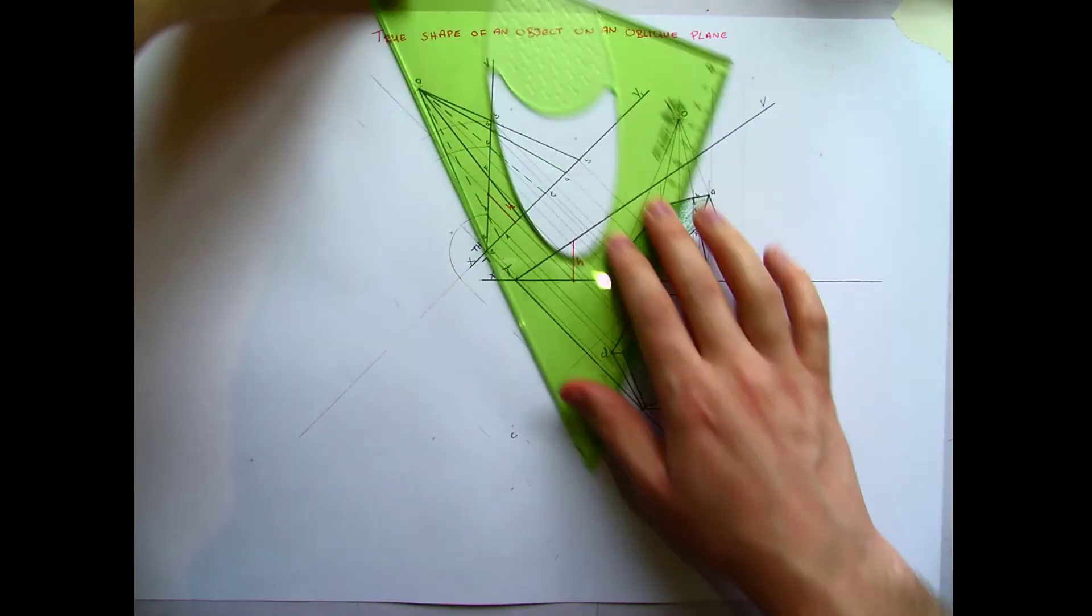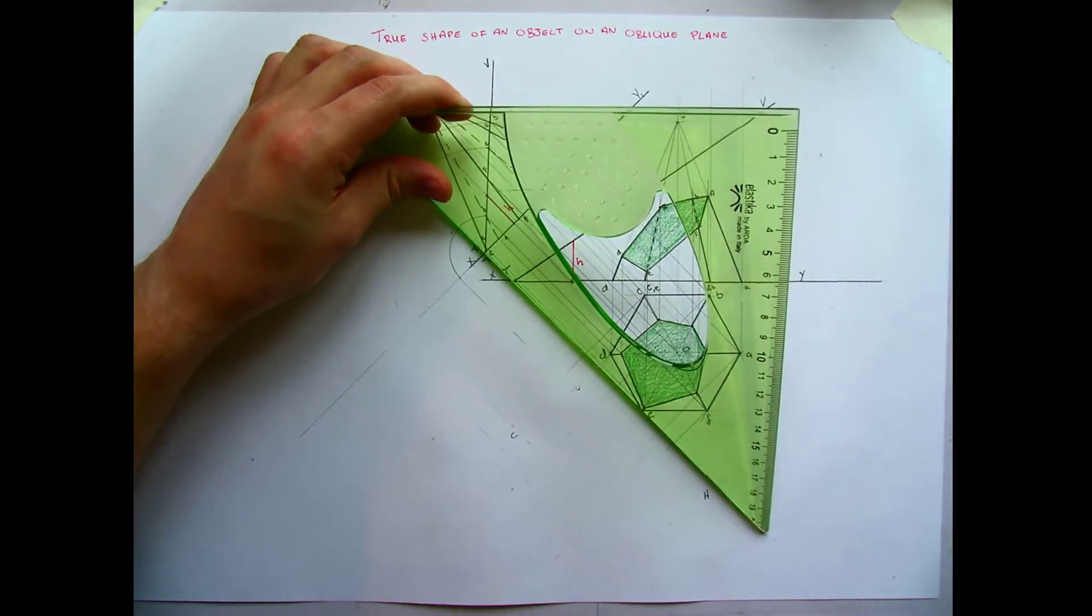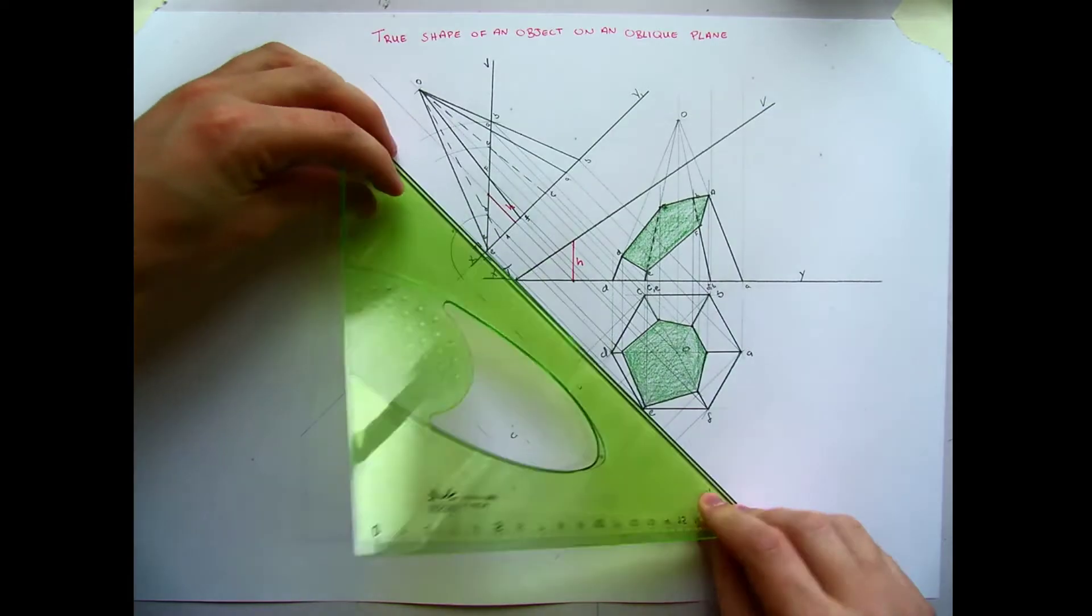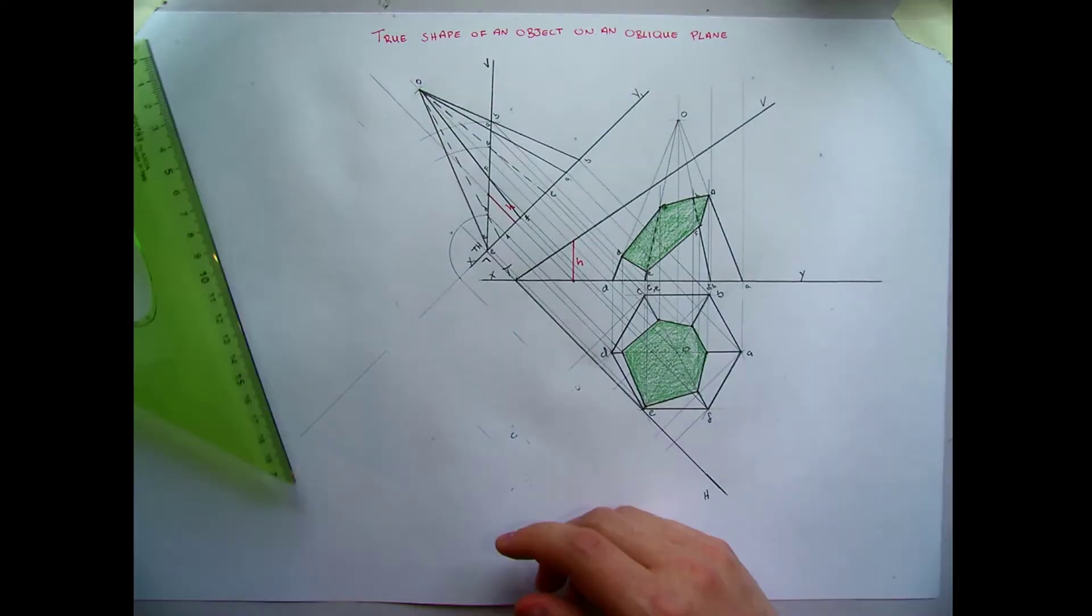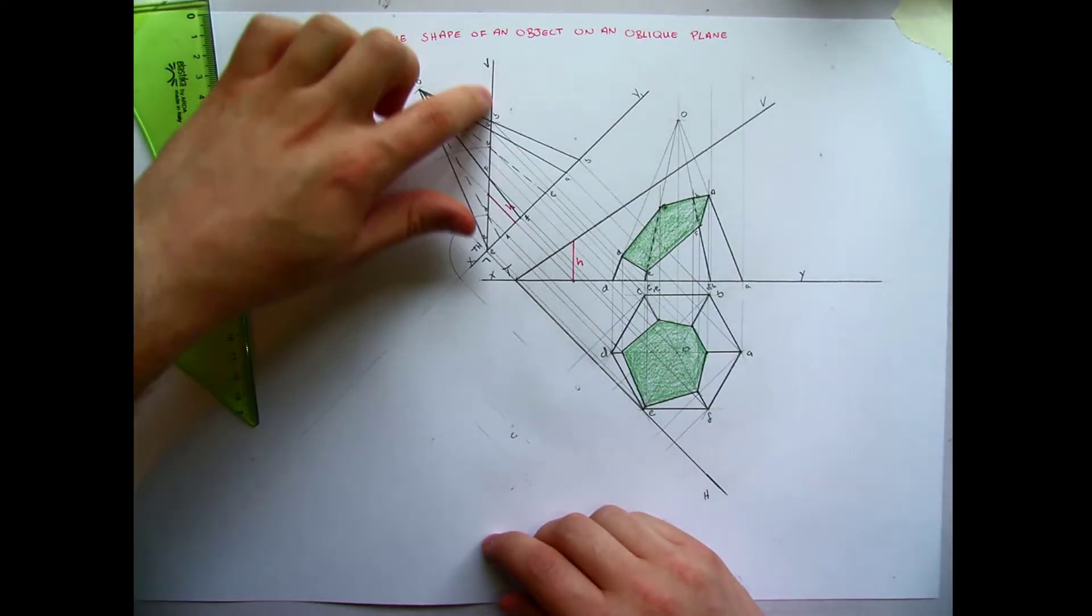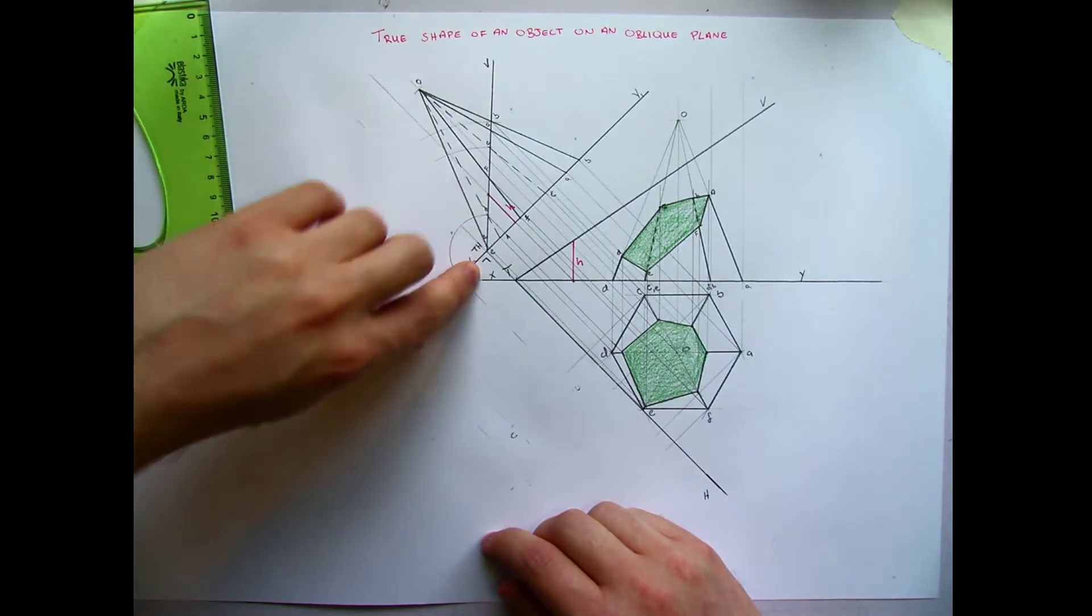Now to do this, what we need is we need our plane here, and we need to find an edge view of that plane so that we're able to rotate this plane around. Now thankfully we already have that view, we found it in the earlier video where we looked at finding where the oblique plane cuts the solid.